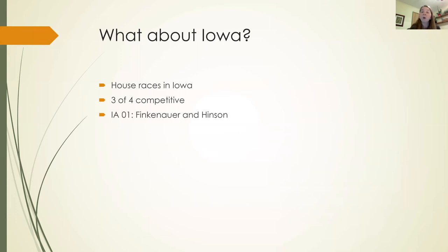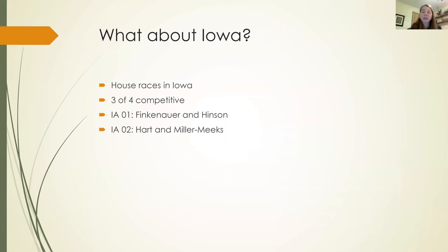In the first district of Iowa, we have freshman Democrat Abby Finkenauer — it's her first reelection cycle, when you're most endangered. Ashley Henson is running against her as the Republican. This is two females running, which is a little unusual. This is a toss-up. In the Iowa second district, it's an open seat — Democrat Dave Loebsack currently holds it but there's no incumbent. Rita Hart is the Democrat and Marianne Miller-Meeks is the Republican. This is also seen as a toss-up.